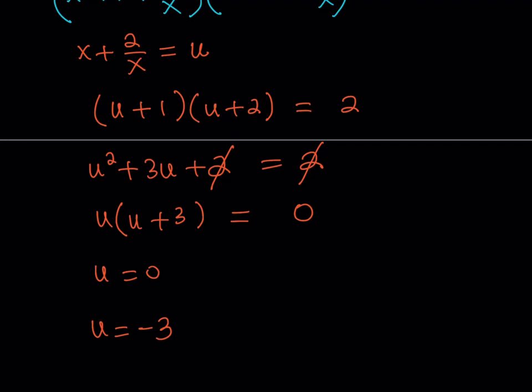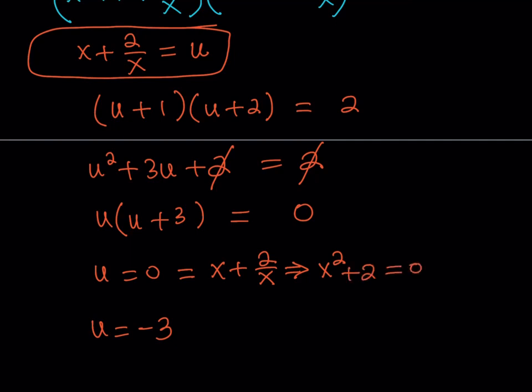But what is u? u is x + 2/x. So what I'm going to do is set x + 2/x equal to 0. From here I can multiply both sides by x because I have a 0 on the left hand side, so it doesn't really matter.